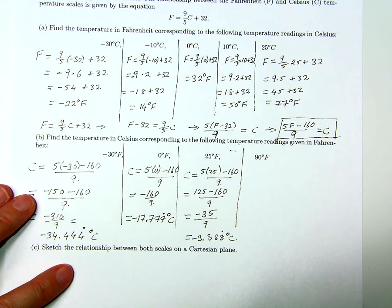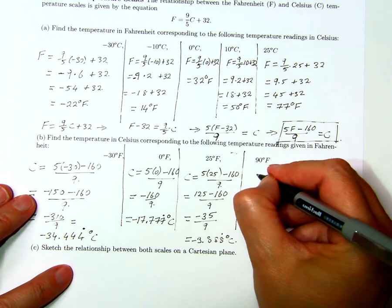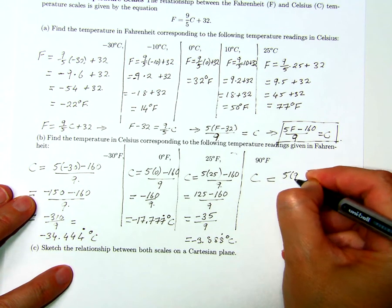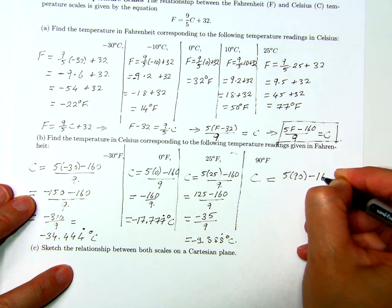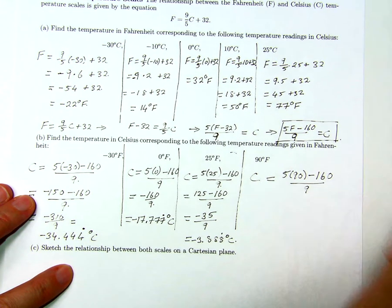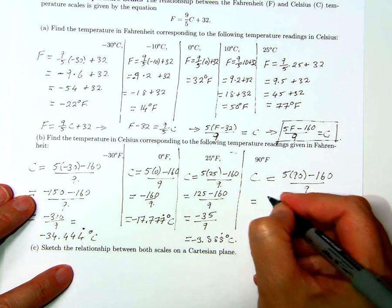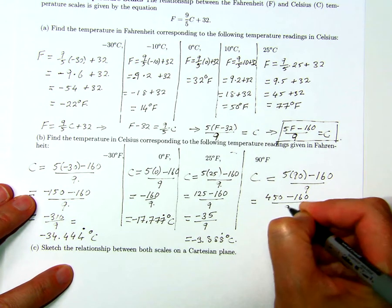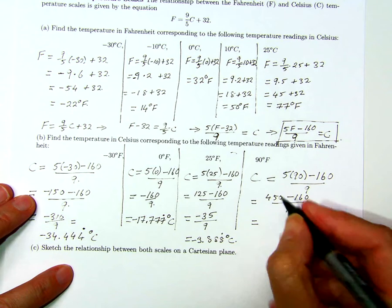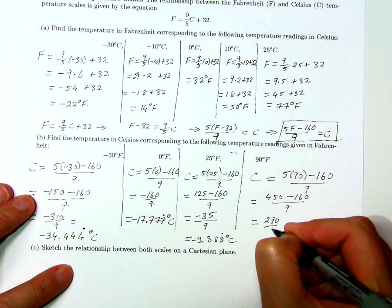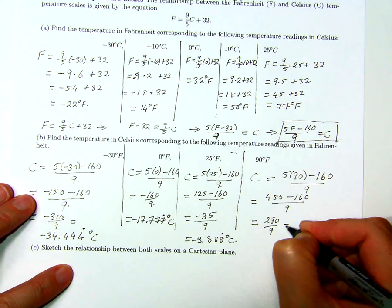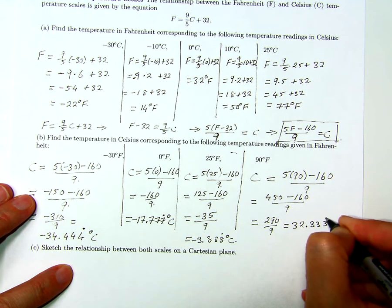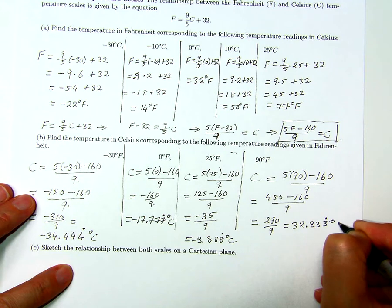For 90 degrees Fahrenheit, the Celsius reading is 5 times 90 minus 160 over 9, and that's 450 minus 160 over 9. That's equal to 290 over 9, which equals 32.333... — those 3's go on forever — degrees Celsius.